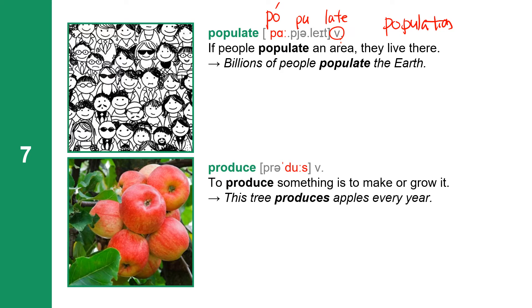Next one: produce. Produce has two syllables: P-R-O-D-U-C-E. Produce is a verb. To produce something is to make or grow it. This tree produces apples every year.